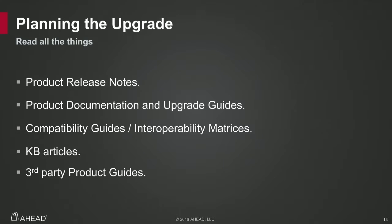When planning through the upgrade, we want to read everything: the product release notes, product documentation, upgrade guides, compatibility guides, interoperability matrices, KB articles, and third-party product guides. There are a lot of little nuances and caveats that will cause problems during and after the upgrade — like Spectre/Meltdown, for example. You want to know which patches to apply and in what order.